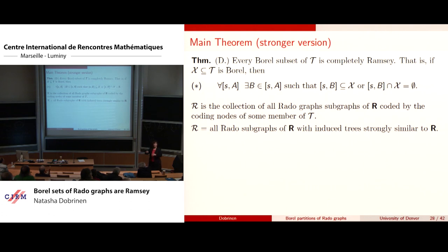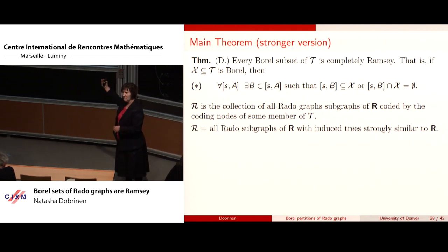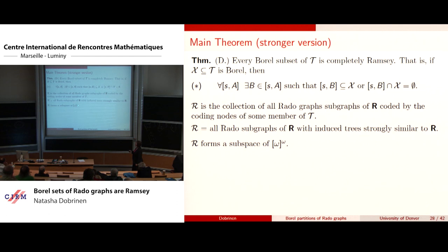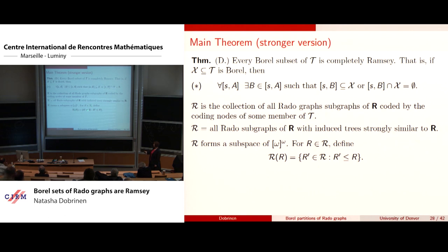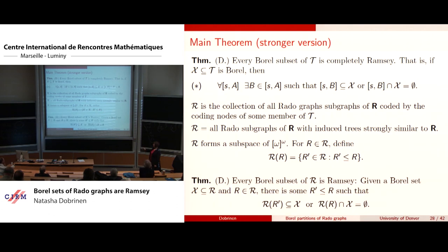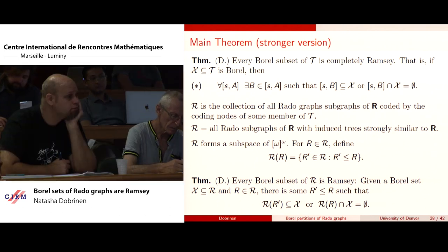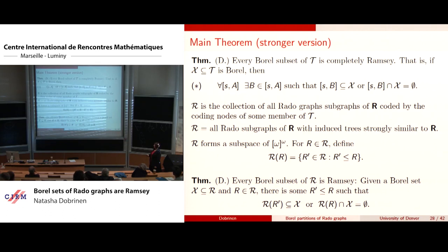There is a back-and-forth between the particular Rado graphs coded by the coding nodes in the trees and the trees themselves. This forms a subspace of the Baire space with the metric topology. For a given Rado graph in this space, the R-cube is all R-primes in the space which are induced subgraphs of R. The main theorem says every Borel subset of R is Ramsey: if you have a Borel set and a member of R, there is a sub-Rado graph such that this cube is either contained in or disjoint from X.